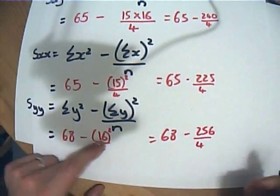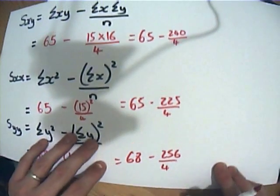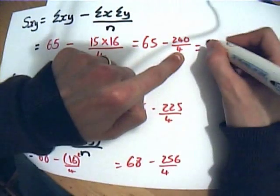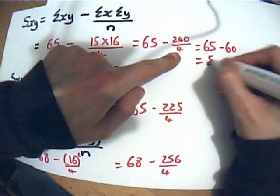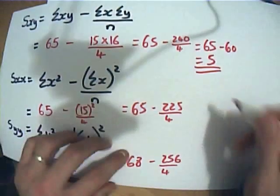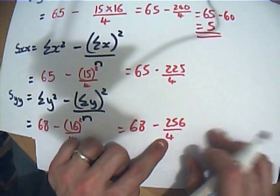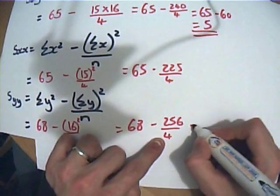Can I tidy any of these up? This one's going to be 65 take 240 over 4 is 60, so that's worth 5. This one down here, 256 divided by 4 is 64, so that's going to be worth 4.